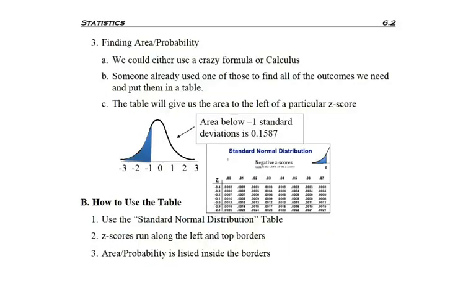So if we want to find probability, it turns out that's going to be the exact same thing as finding area. We've kind of already discussed that. Now there's two ways to do it. Well, I guess there's three.